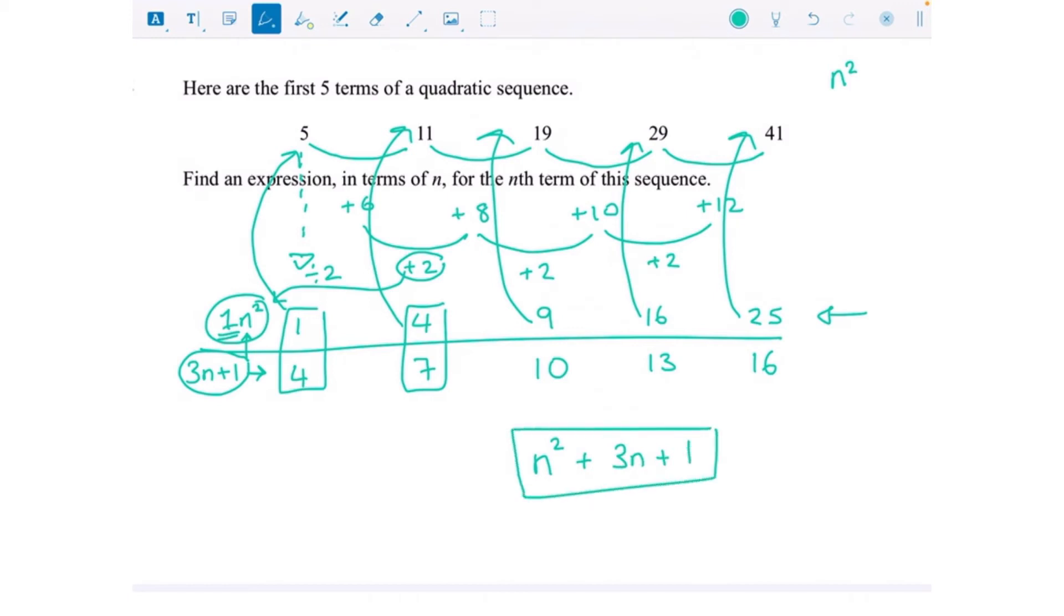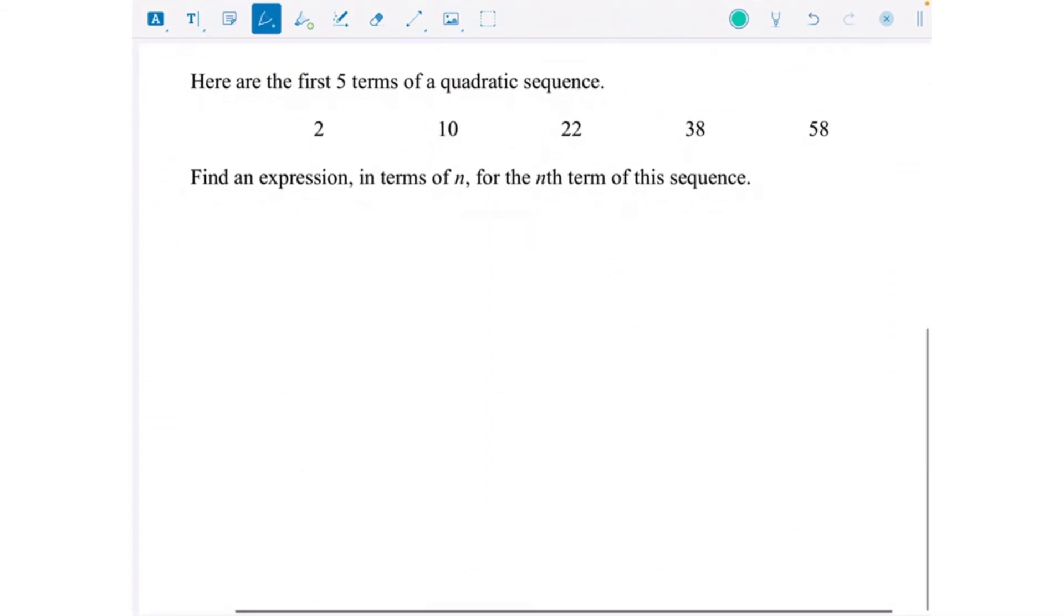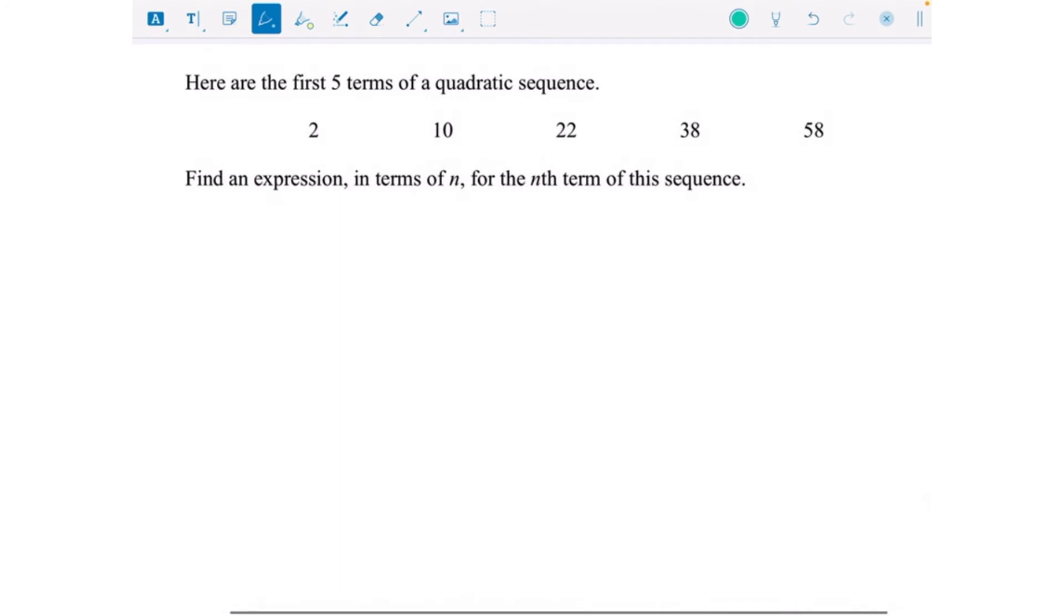Let's just do another one of those. I'm going to do a second question here, and if you want to have a go now would be a great time to pause the video. Here are the first five terms of a quadratic sequence: 2, 10, 22, 38, and 58. Find an expression in terms of n for the nth term of the sequence.